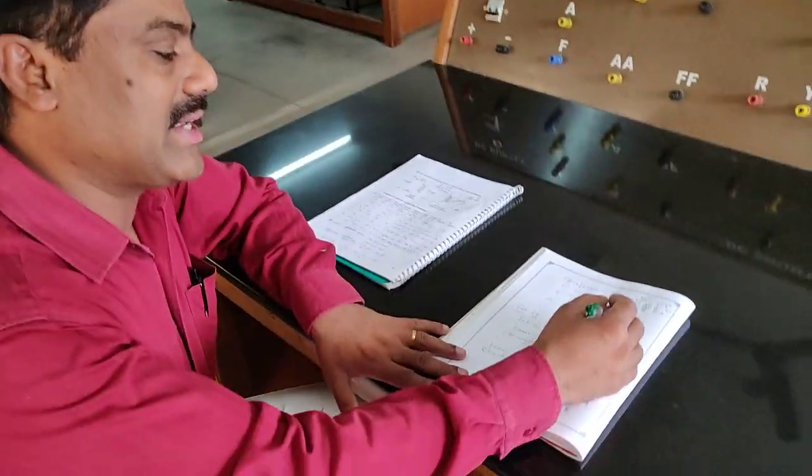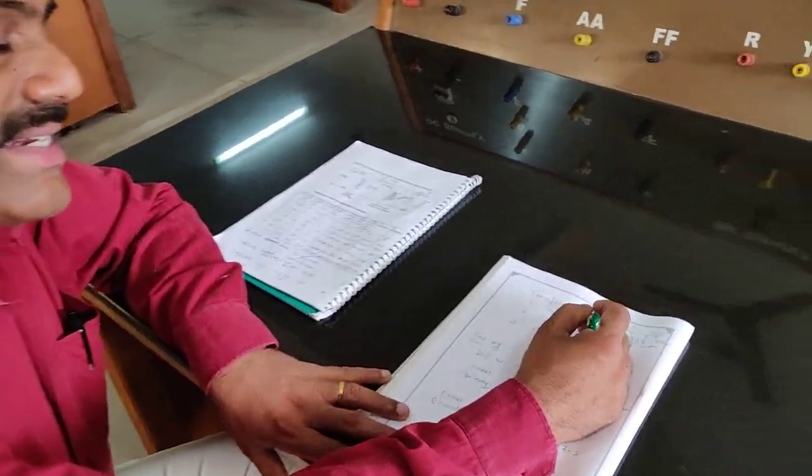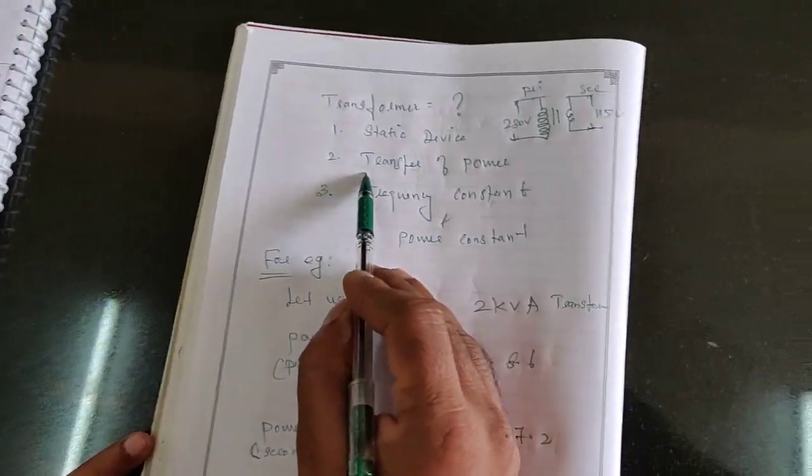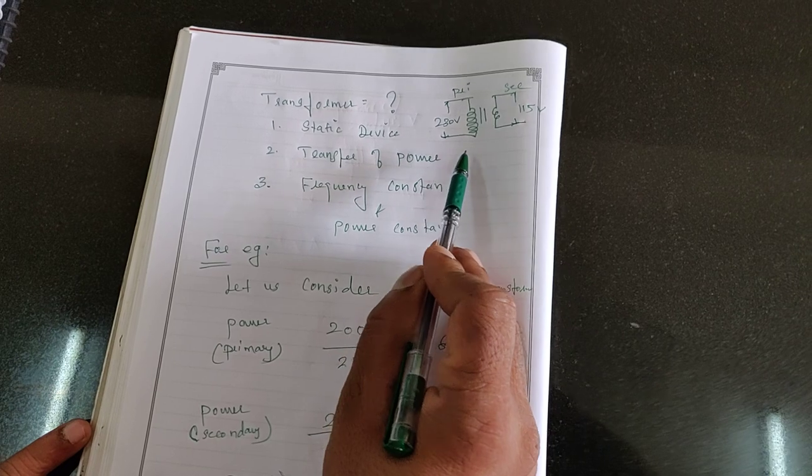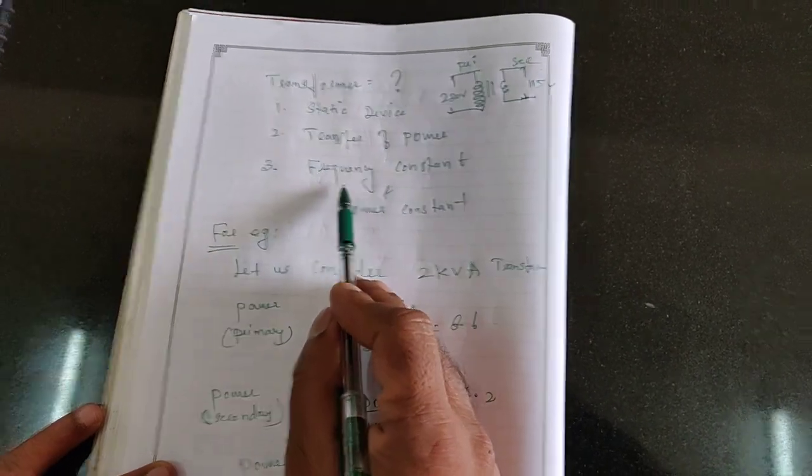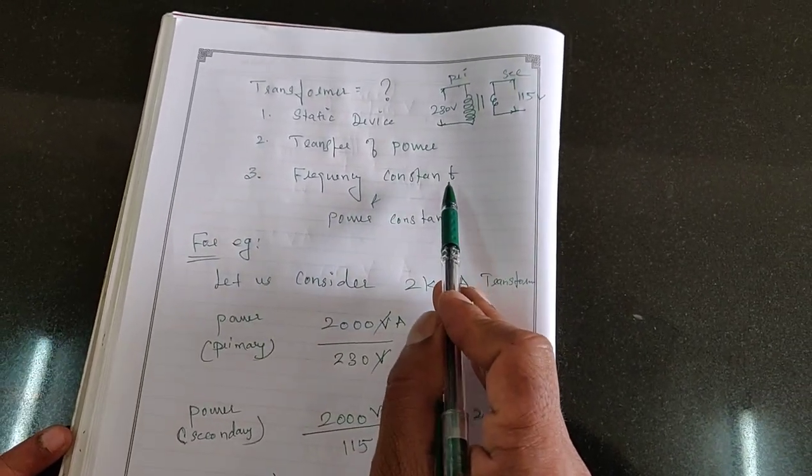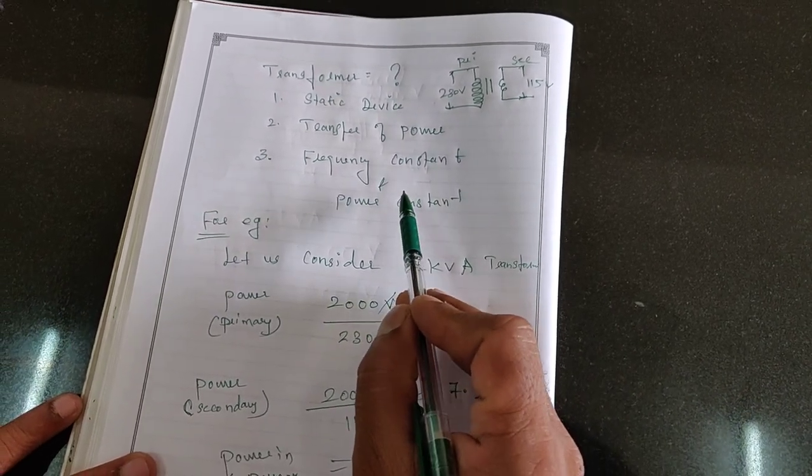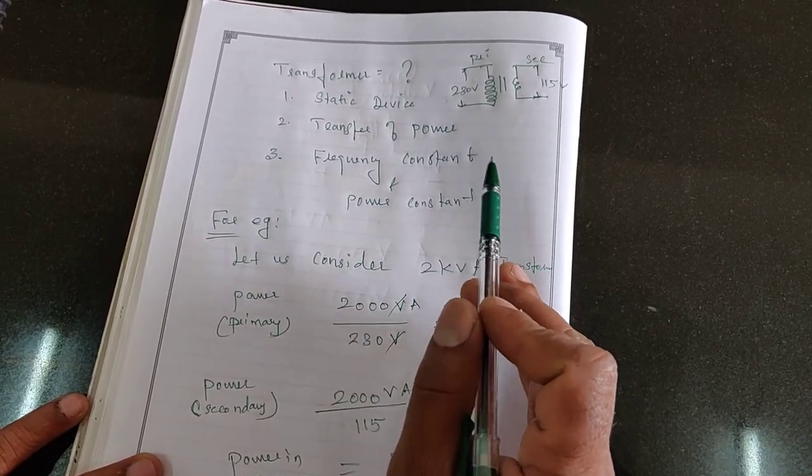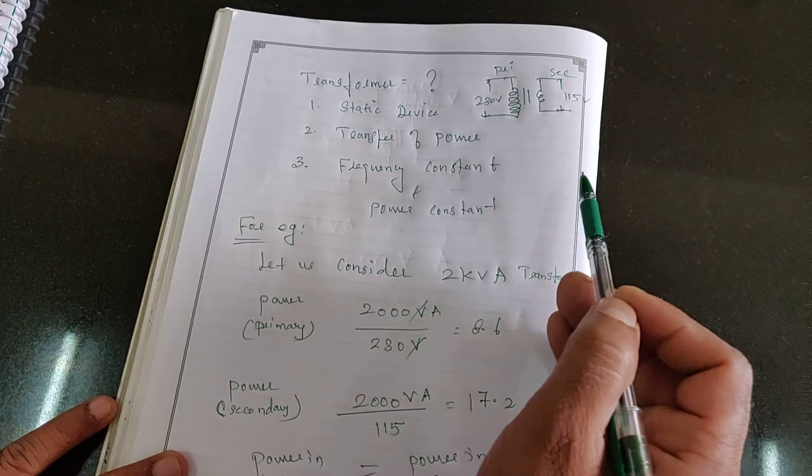And when we go to the transformer, let us first of all tell you what is transformer. Transformer is a static device which transfers the power from one circuit to another circuit without change in the frequency as well as power. It means the power and frequency is kept constant both in the primary side as well as in the secondary side.